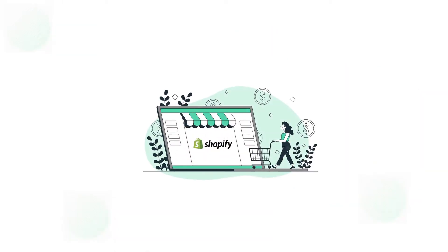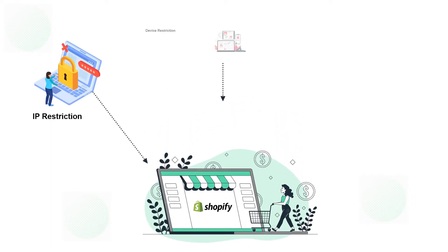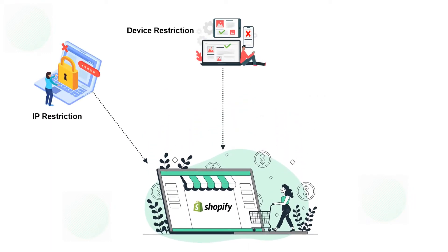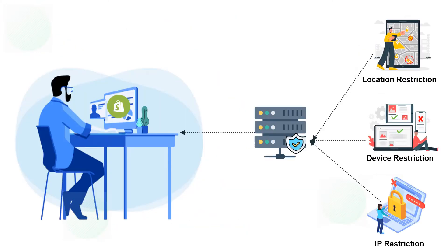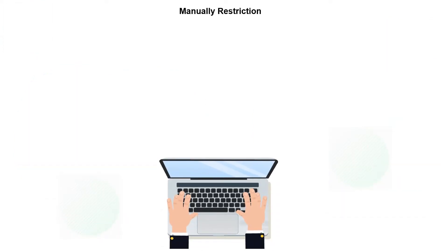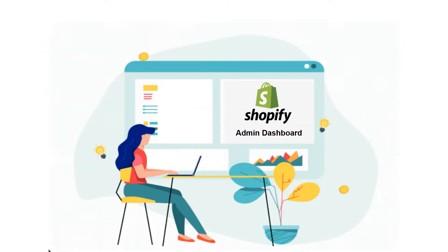The Shopify Store Admin Dashboard can be secured by enabling IP restriction, device restriction, and location-based restriction with the help of a reverse proxy server. This way, you can configure the network over which the admin of your company can access the Shopify Admin Dashboard. You can also manually restrict the IPs, the device, and the user's location to those you want to deny access.